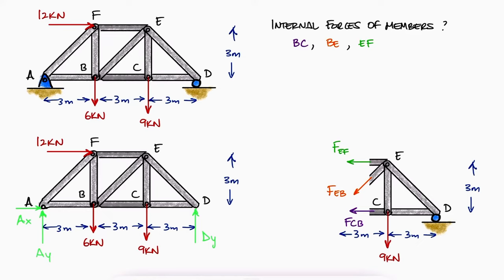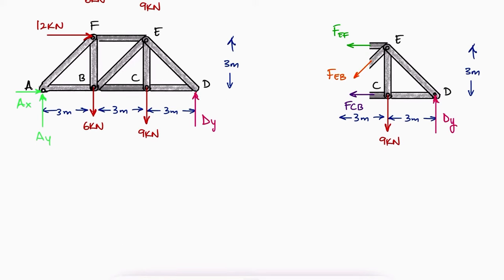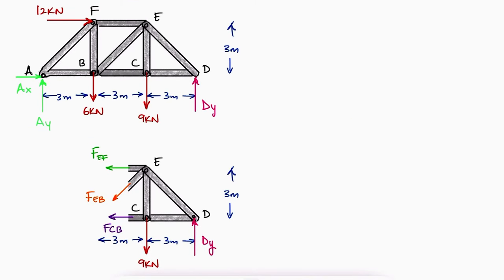In this case, since we're using the right side of the structure, the reaction force we need is DY. From the free body diagram, we see that a sum of moments about A would work perfectly to solve for the reaction force at D, since the lines of action of the reaction forces at A pass through A.